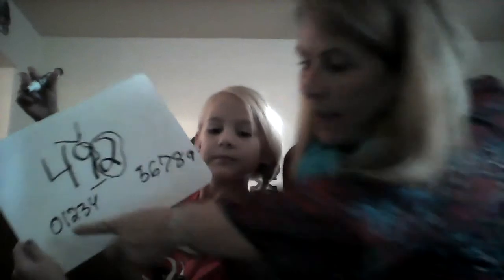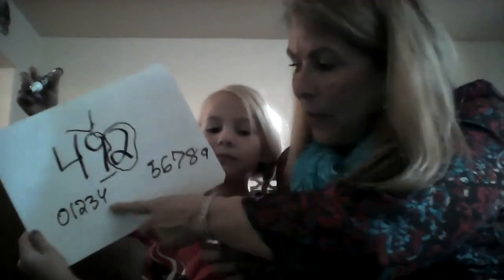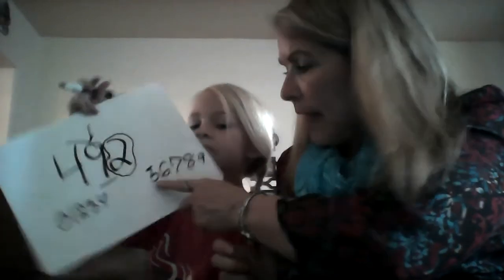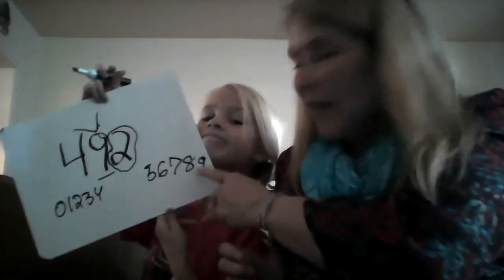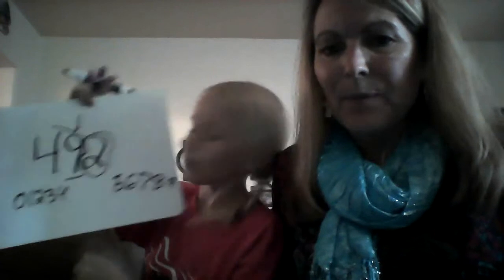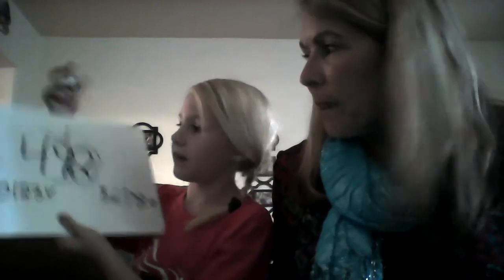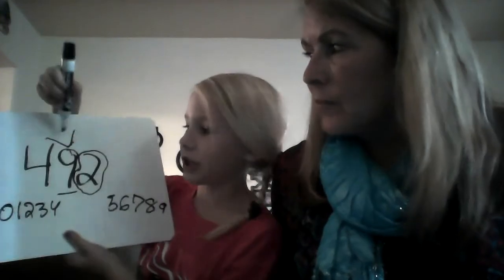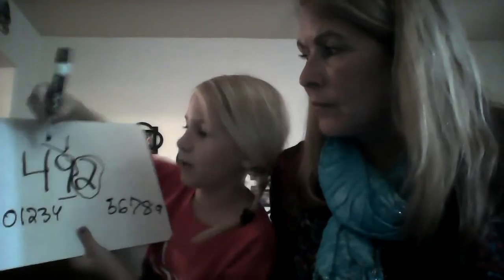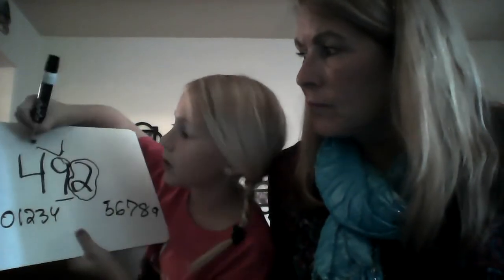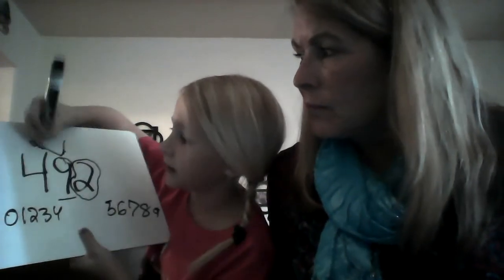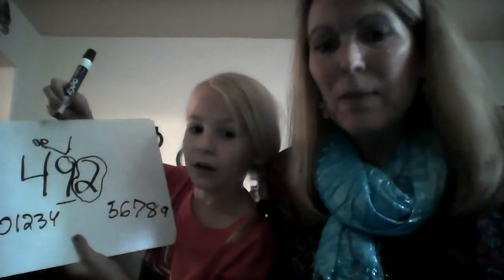So we've got zero, one, two, three, and four on the left side, and five, six, seven, eight, nine on the right side. And then up here you're going to write what it rounds to — so it'd be 90, that'd be the small, or it'd be 100.